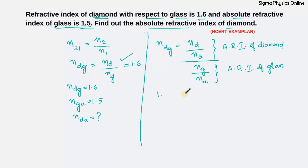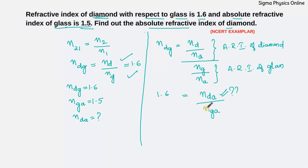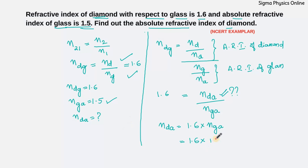This value is 1.6, so the refractive index of diamond with respect to glass equals the refractive index of diamond with respect to air divided by the refractive index of glass with respect to air. I am asked for the refractive index of diamond with respect to air, so rearranging this equation: the refractive index of diamond with respect to air equals 1.6 times the refractive index of glass with respect to air. The absolute refractive index of glass is given as 1.5, so we get 1.6 times 1.5, which is 2.4.